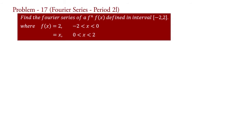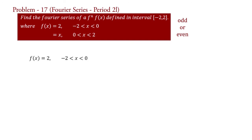It is very clear that this function is neither even nor odd. Though you have doubt, then follow this process. Let f(x) equal to 2 for minus 2 less than x less than 0. Save as equation 1.